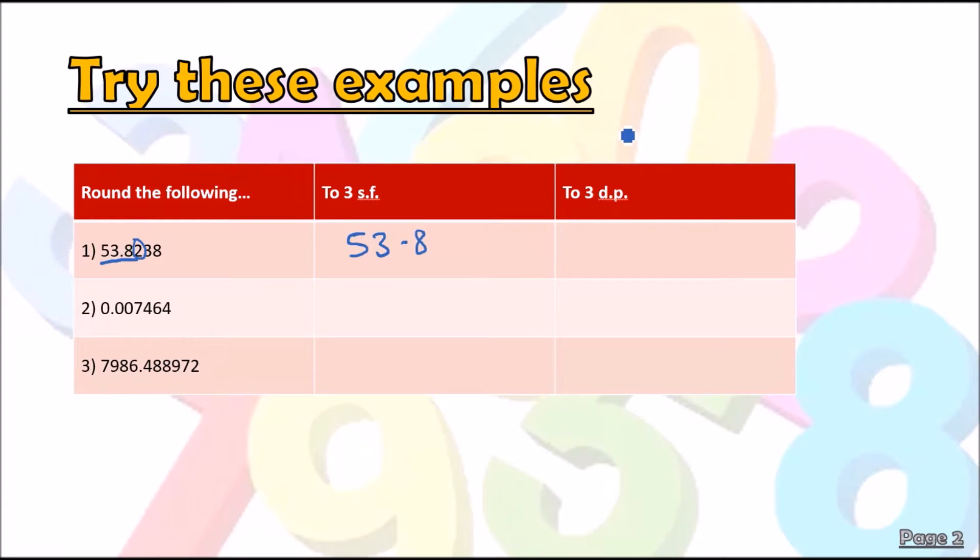And now we look at three decimal places. So here we look at the first three numbers. As eight is less than five, the number stays at four. So it'll be 53.824. Let's repeat the same thing here. Three significant figures would be up to here. As four is less than five, it's just going to be the same number without the four.